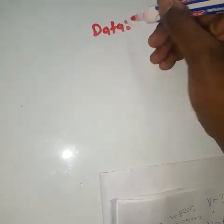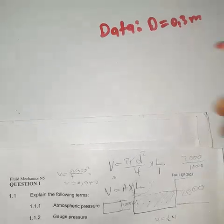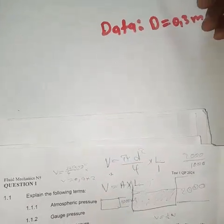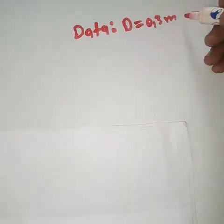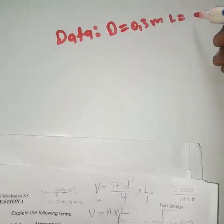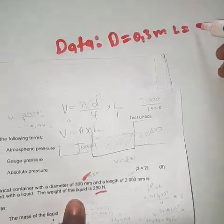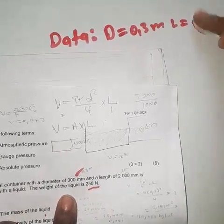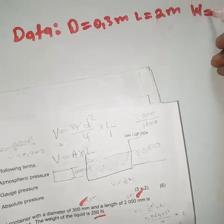The data we are given: diameter is 300 millimeters, which equals 0.3 meters — we divide by 1000 to convert to meters. The length is 2000 millimeters, which equals 2 meters after dividing by 1000. We are also given the weight W, which is equal to 250 newtons.